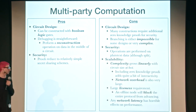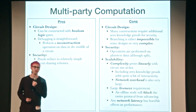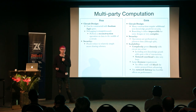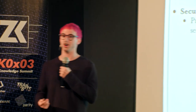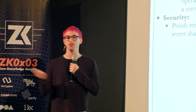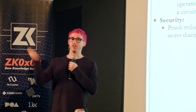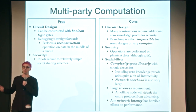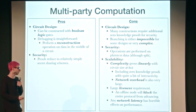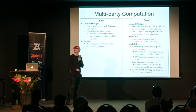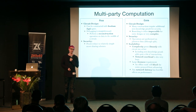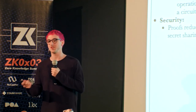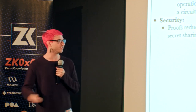The biggest problems with MPC come with scalability. Complexity grows linearly with the circuit at best, and zero-knowledge proofs add a lot of interactivity between the parties. Network overhead is very large — some schemes may require exponential communication. There is also a huge liveness requirement: a single offline node can block the entire protocol from continuing. Any network latency can have absolutely horrible effects; if you have to wait 10,000 milliseconds to communicate with one party and it's exponential, you continuously wait to finish the protocol.